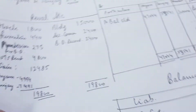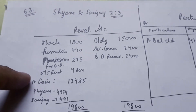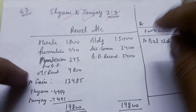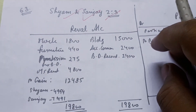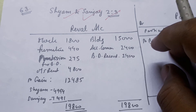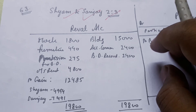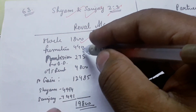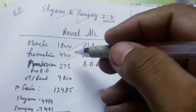Come to Question 63. Shiam and Sanjay have a 2:3 ratio and have made a partner. Shankar has 30,000 capital and 20,000 goodwill, which will be retained in the business. There are 5 points of revaluation to discuss: stock is 18,000, furniture is 4,400, stock is 4,440.